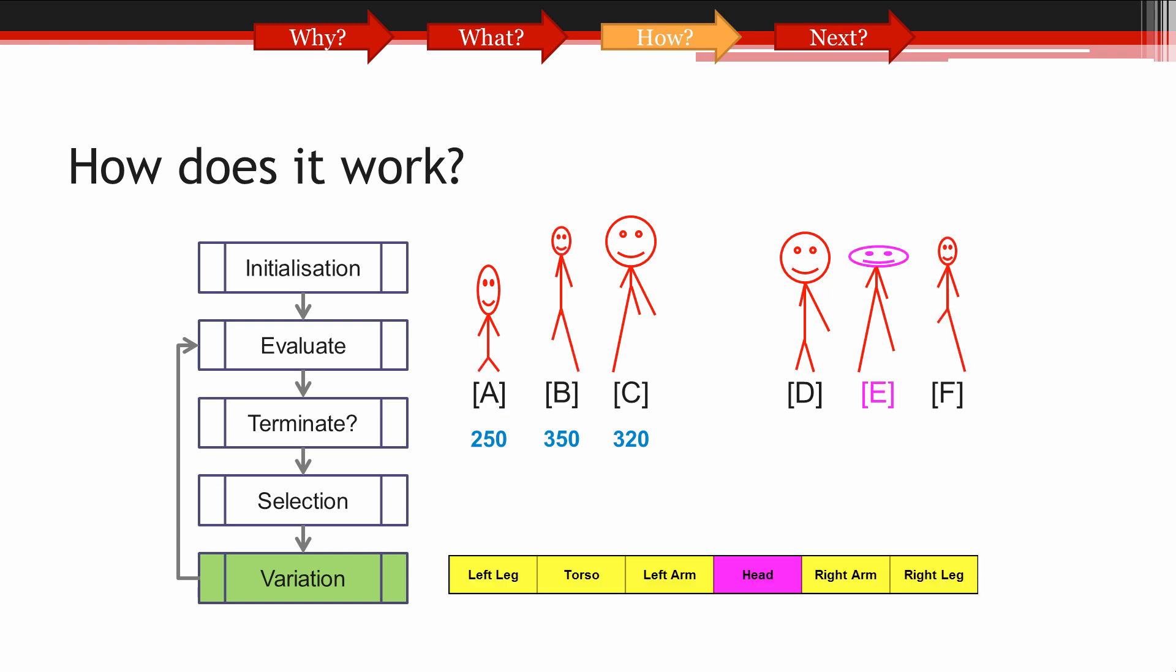Now we're done with crossover. However, if the only method of variation we ever use is crossover, then we'll never introduce any new genetic information into our population. This is because at every generation, we will just be mixing together the same genetic information which we started with at the initial population. To solve this, we use another method of variation which is typically used together with crossover. This is called mutation.